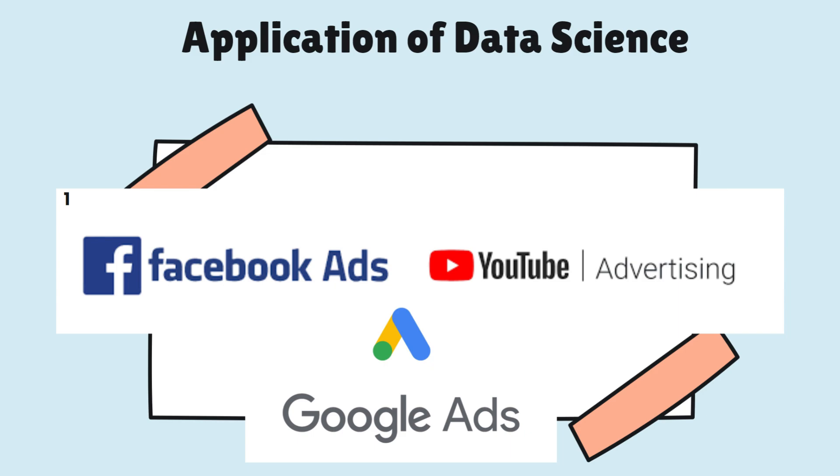First application of data science: companies like Google and Facebook use data science algorithms to analyze user data, browsing behavior and interests to deliver targeted and personalized ads to increase their effectiveness and potential for conversion of customers.